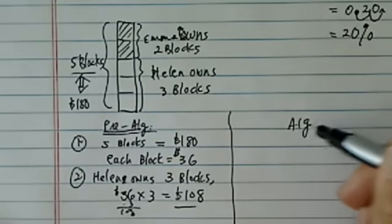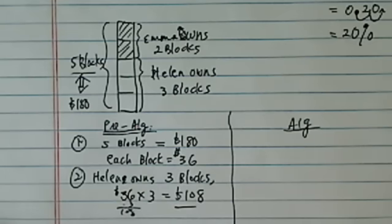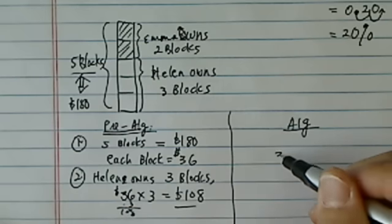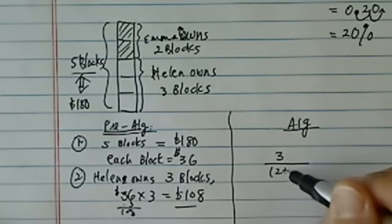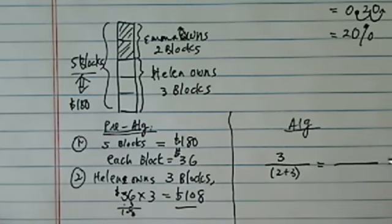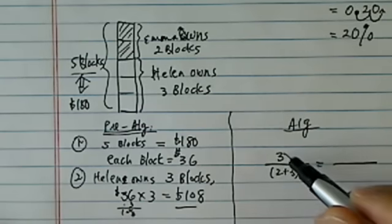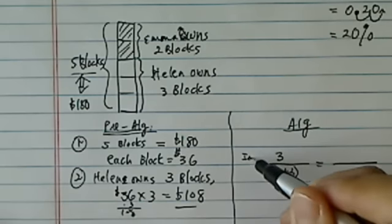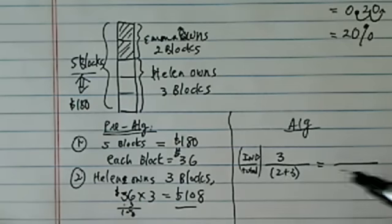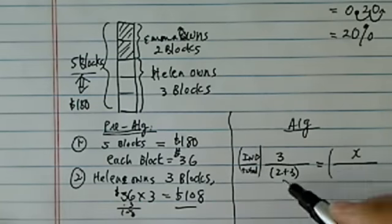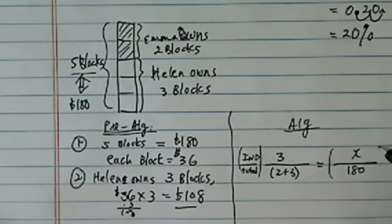Let's take a look at how we're doing the algebra method. We're going to express into the ratio. Helen owns 3 blocks out of 5 blocks altogether. When you're doing the ratio, it's important you keep—this is the individual one, this is the total. We're going to do exactly the same. I don't know how much Helen owns, but I do know altogether it's $180.